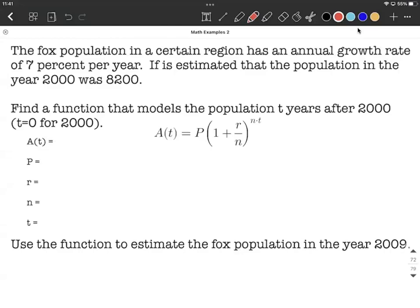Okay, let's model some population growth using exponential functions. A fox population in a certain region has an annual growth rate of 7% per year. It's estimated that the population in the year 2000 was 8,200.